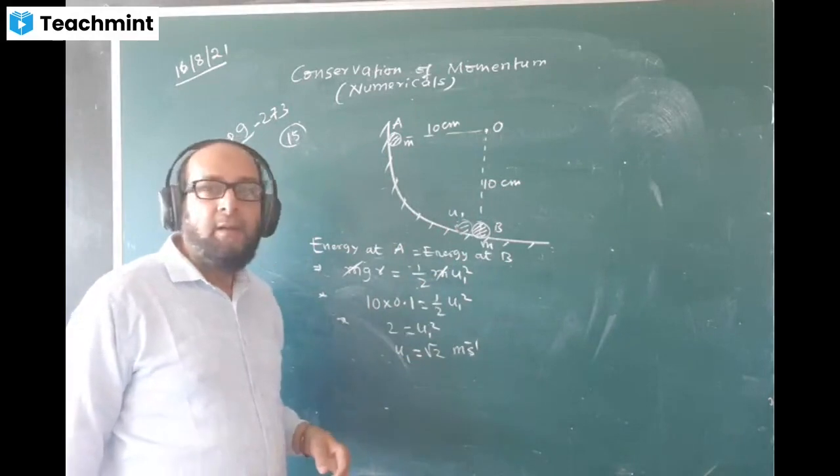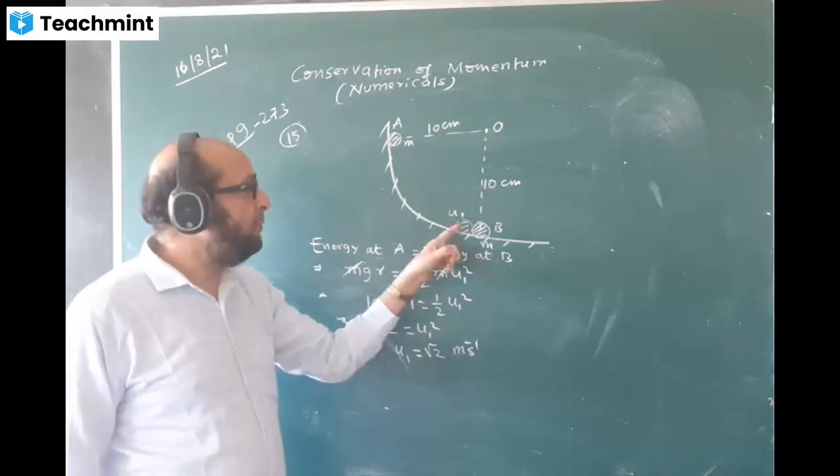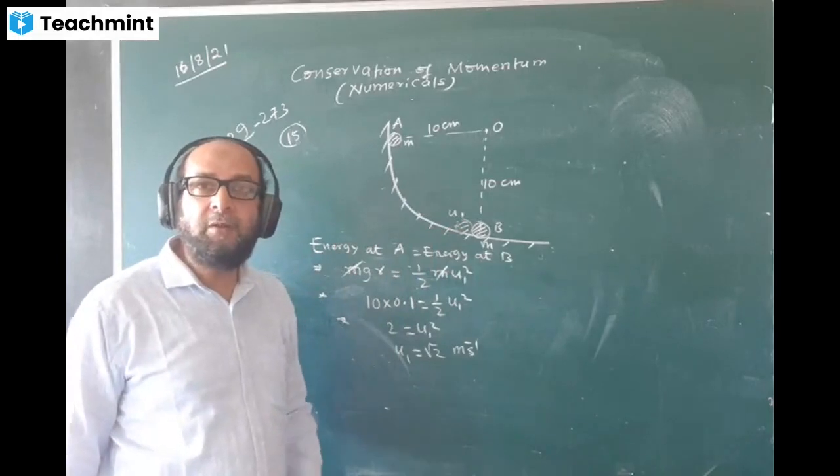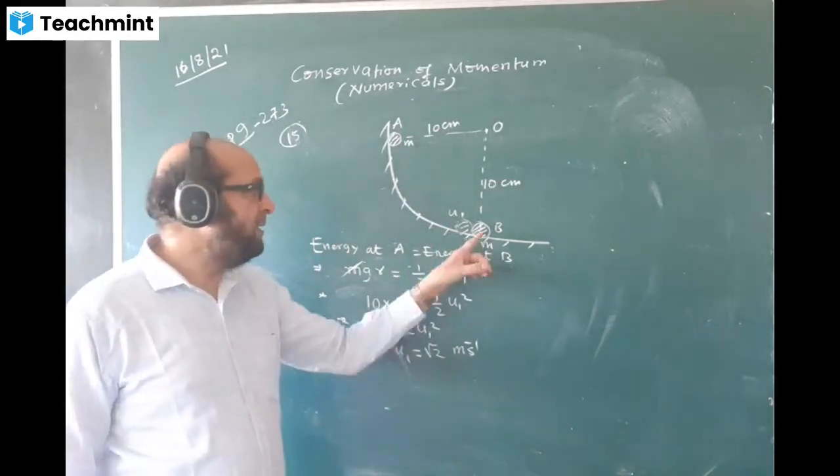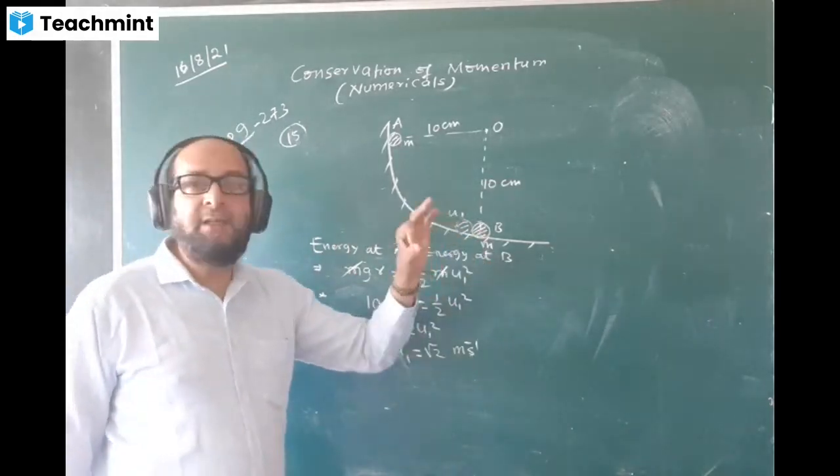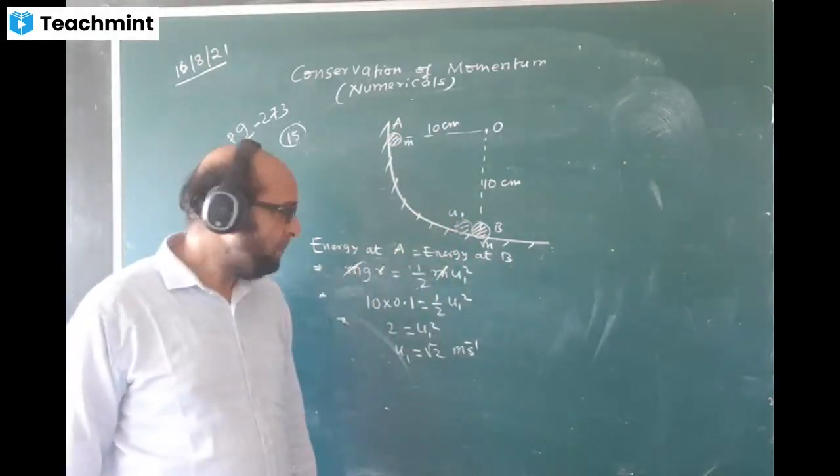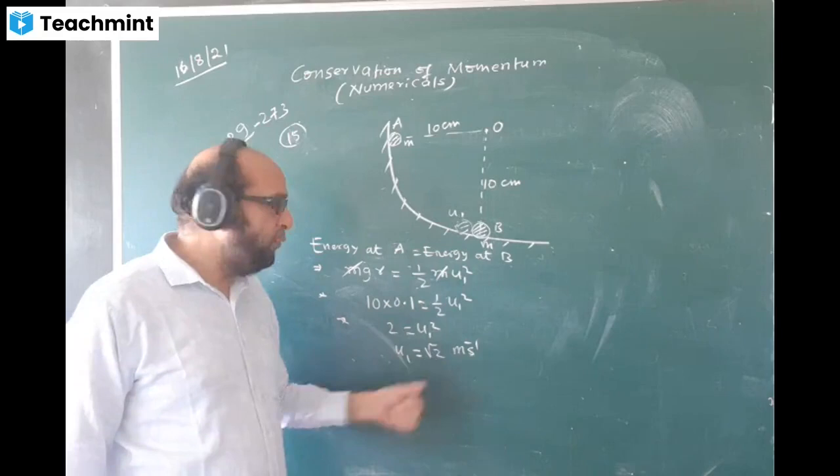You have to see velocity at this point, at the point of collision where the bodies are colliding. This is zero. The second mass is at rest, the first body is only coming and hitting with it. So u1 value we are finding √(2gr).